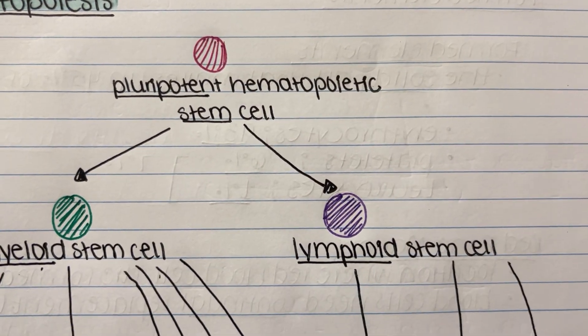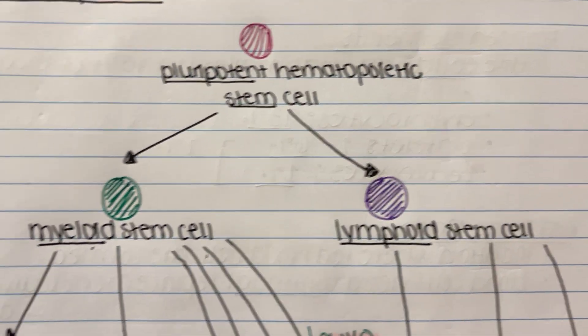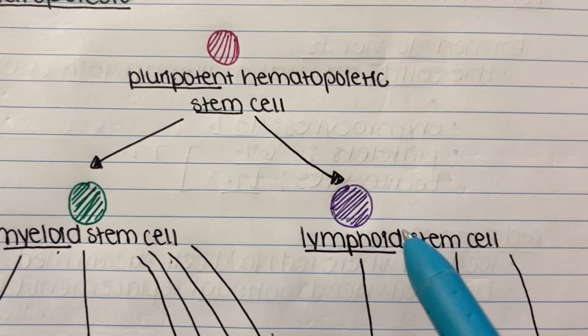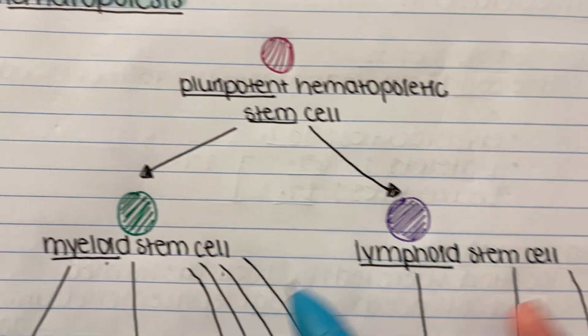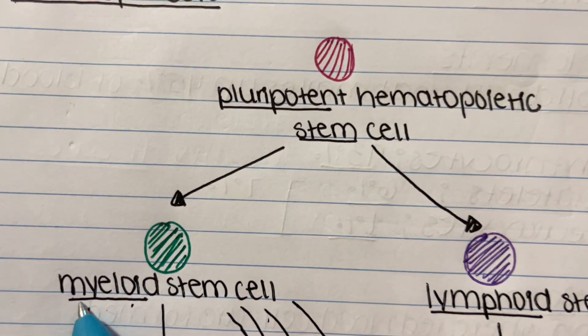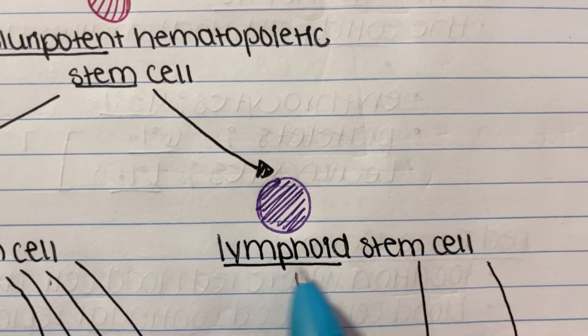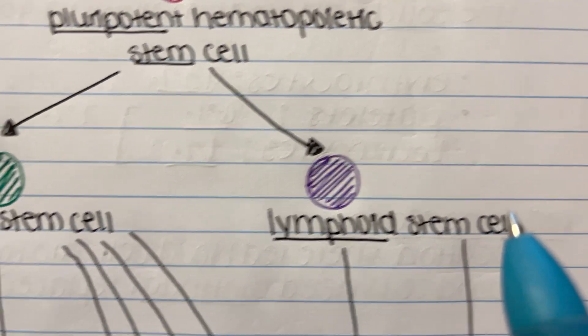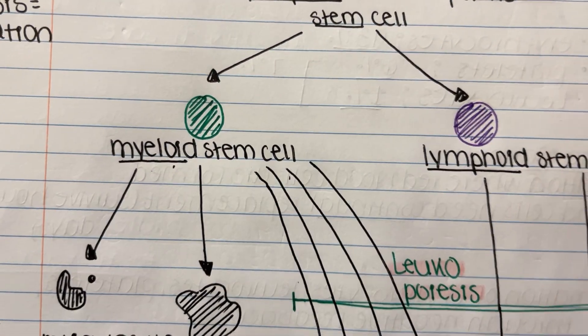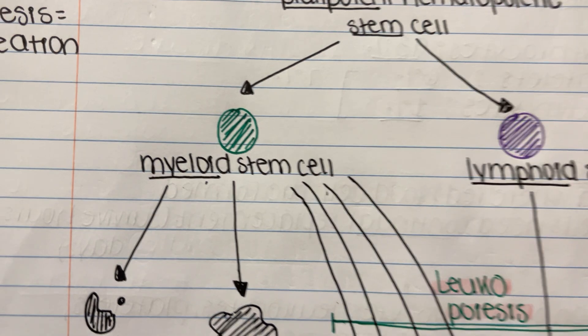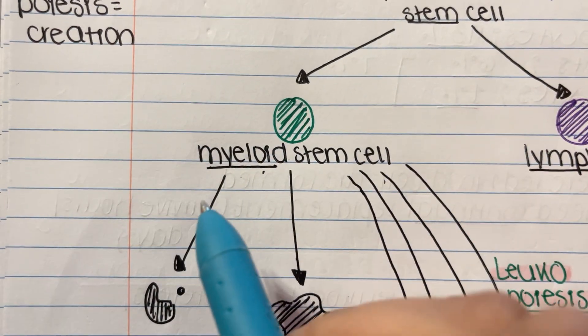So your myeloid is going to create a lot of cells — six — while your lymphoid creates three. Remember: myeloid stem cell and lymphoid stem cell. We'll go through each cell they can create one by one.